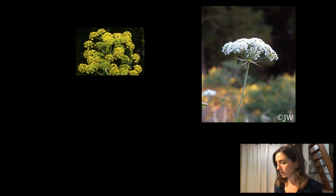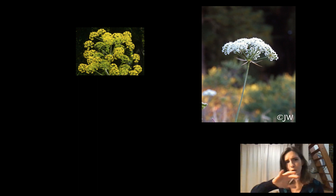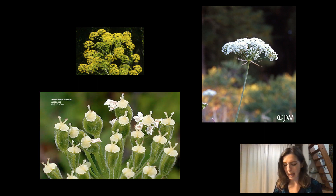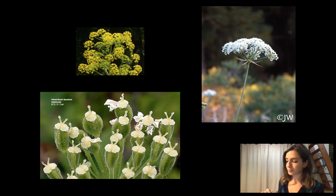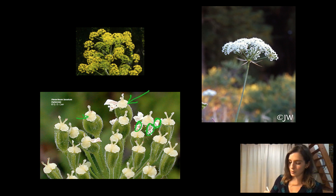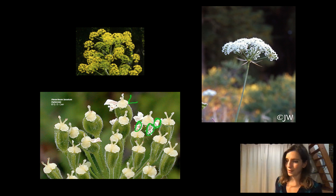Sometimes they've got bracts associated with either of the levels of inflorescence. Sometimes they're more globe-shaped, other times more flat-topped. When we look at the flowers very closely — and actually here the fruits are developing — we see two fused carpels. This one is still hanging on to its petals, attached right at this level, which tells us this is an inferior ovary.